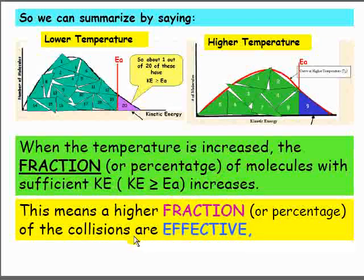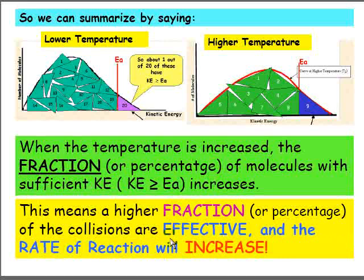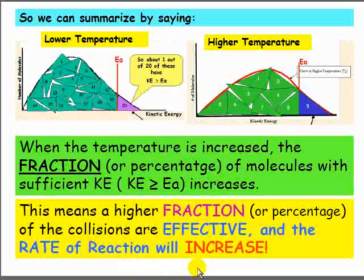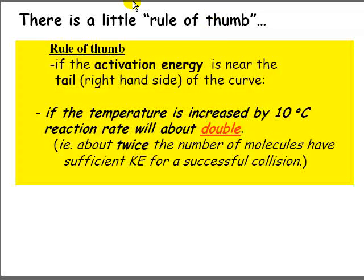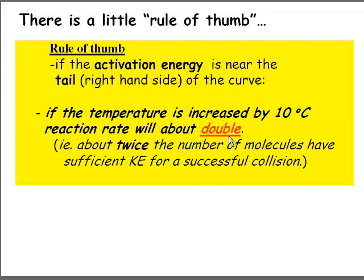This means a higher fraction of the collisions are effective, and the rate of the reaction will increase. There's a rule of thumb: if the activation energy is near the tail of the curve, and the temperature is increased by about 10 degrees, the reaction rate will approximately double — about twice the number of molecules will have sufficient kinetic energy for a successful collision.